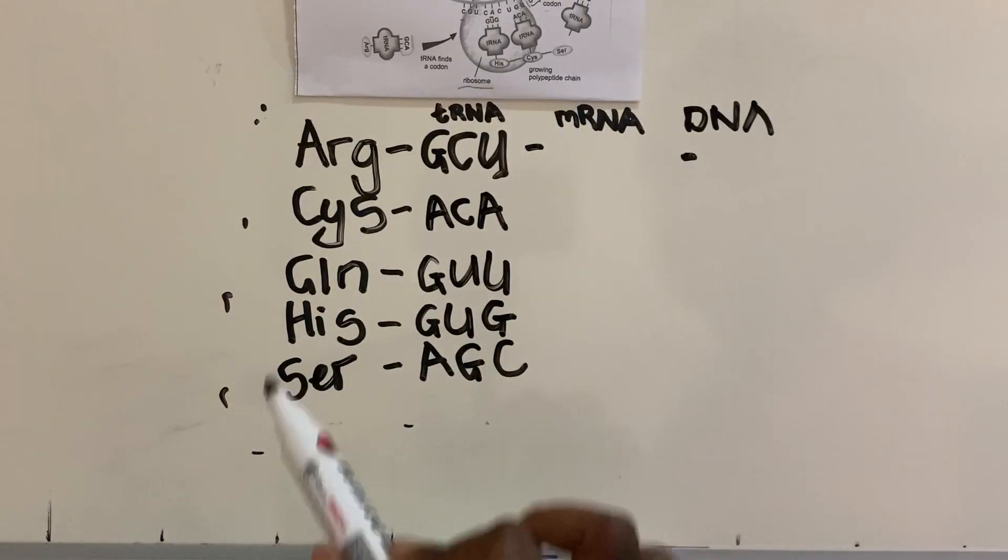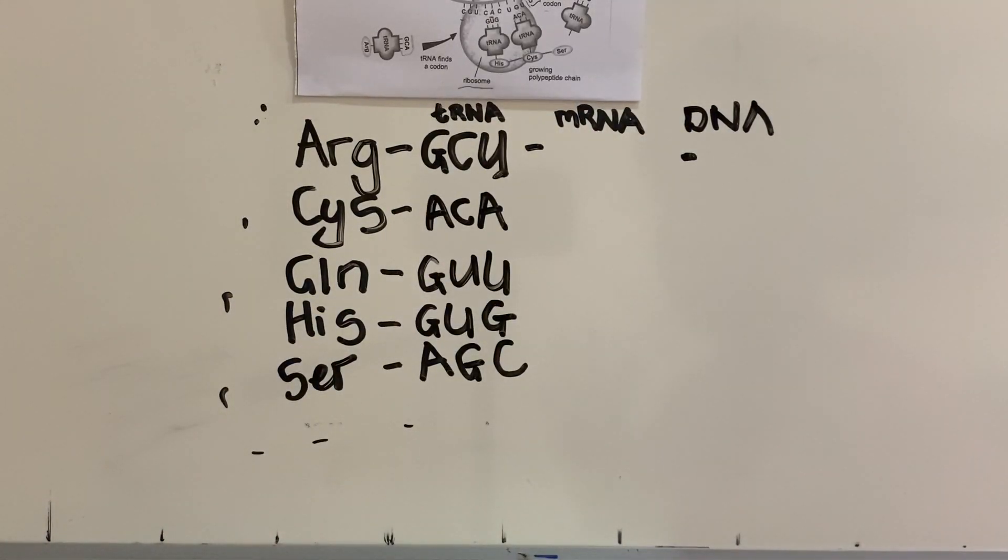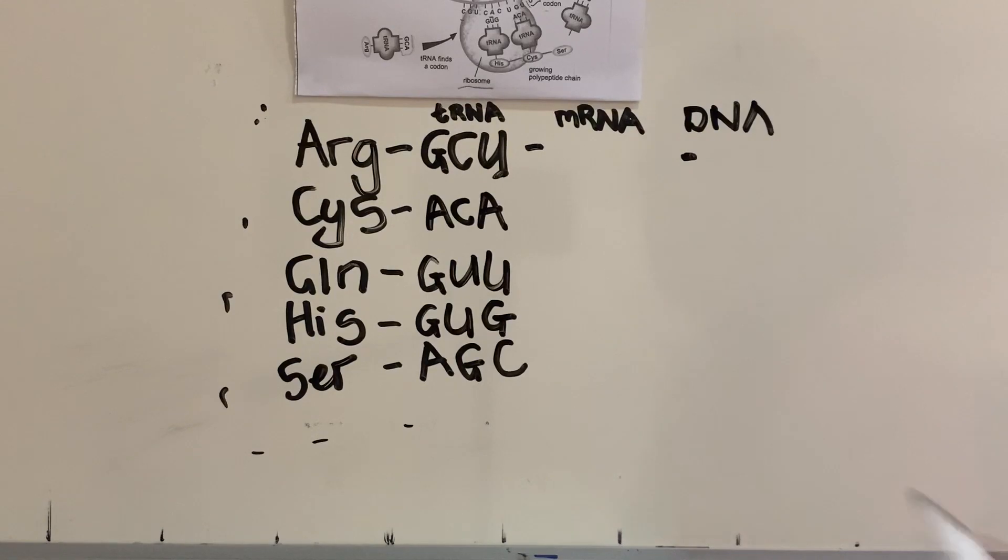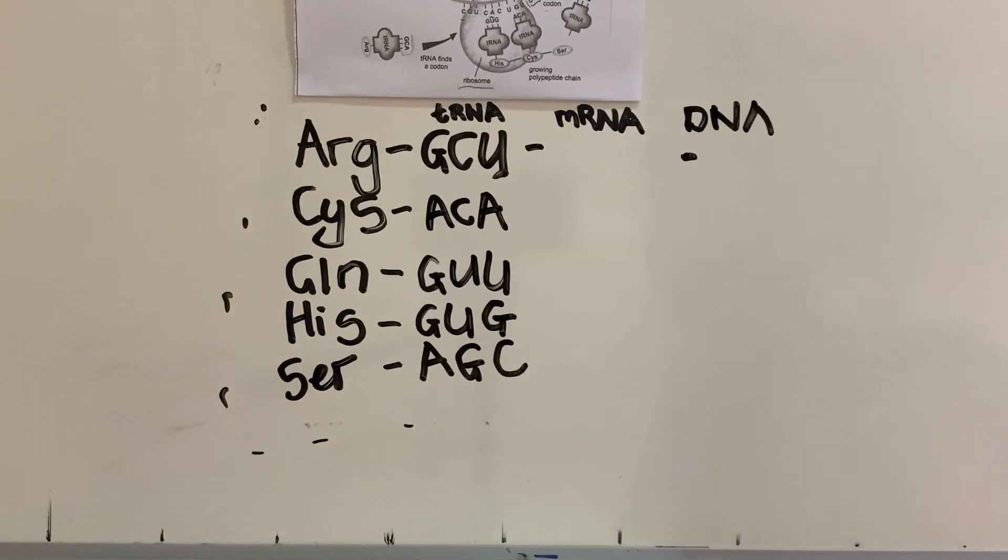They will always give you—you don't have to know this. Okay, Arg stands for arginine, Cys stands for cysteine, and those are all amino acids. But again, you do not have to know this. They will give it to you as I wrote it out like this. So now the question is going to be: write out the mRNA codon from the amino acid Arg.